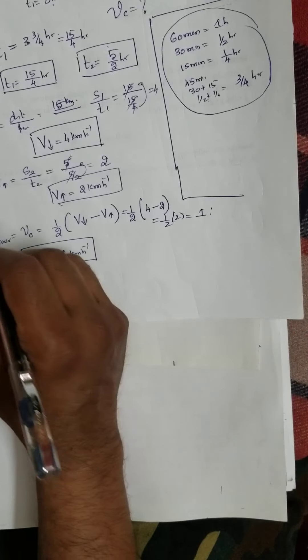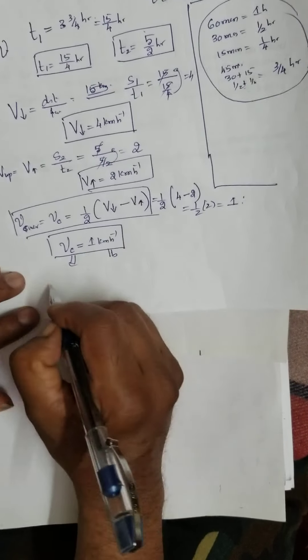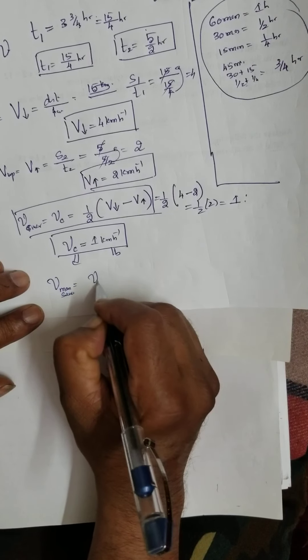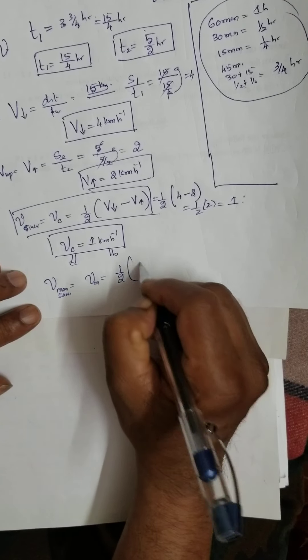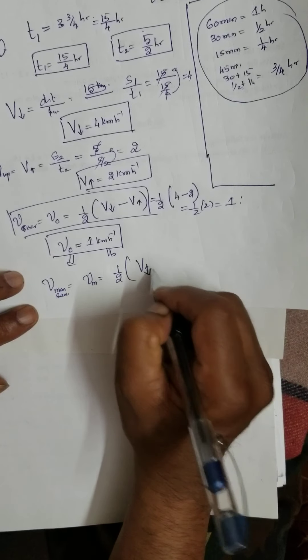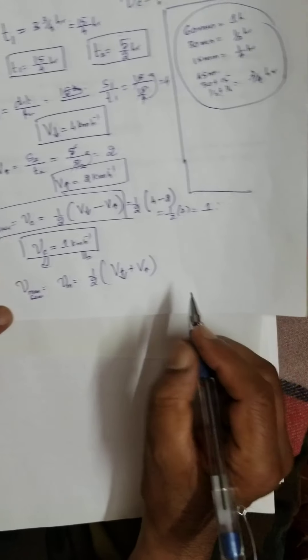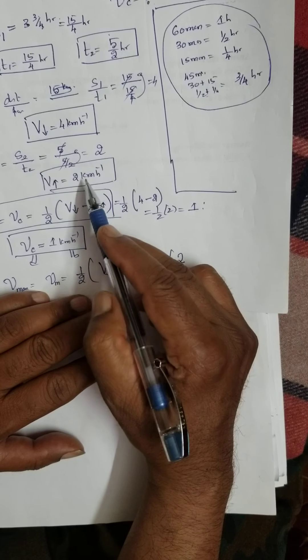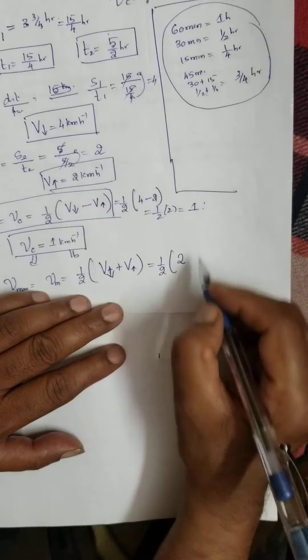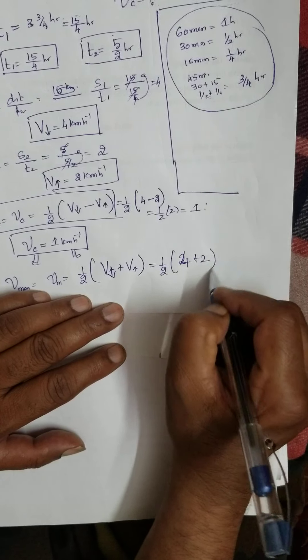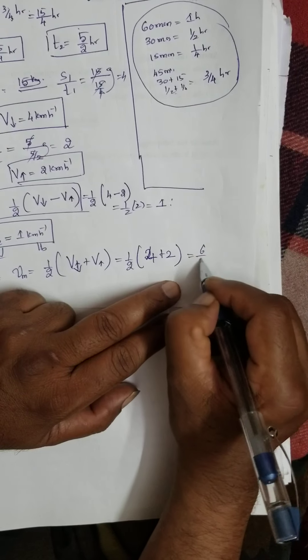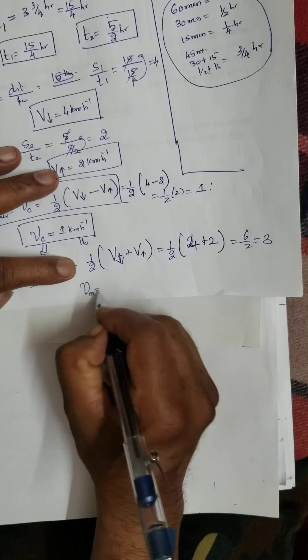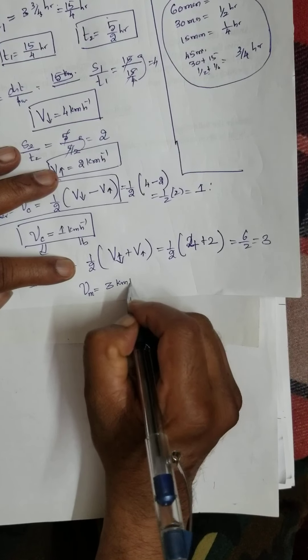And what is, this, you know the formula? Again, velocity of the man or swimmer is equal to velocity m is equal to what? Half into velocity of the downstream plus velocity of the upstream divided by 2. That is half, is how much? 2, sorry, downstream 4. Upstream is 2. Therefore, 6 by 2, 3. Therefore, velocity of the man or swimmer is equal to 3 kilometer per hour.